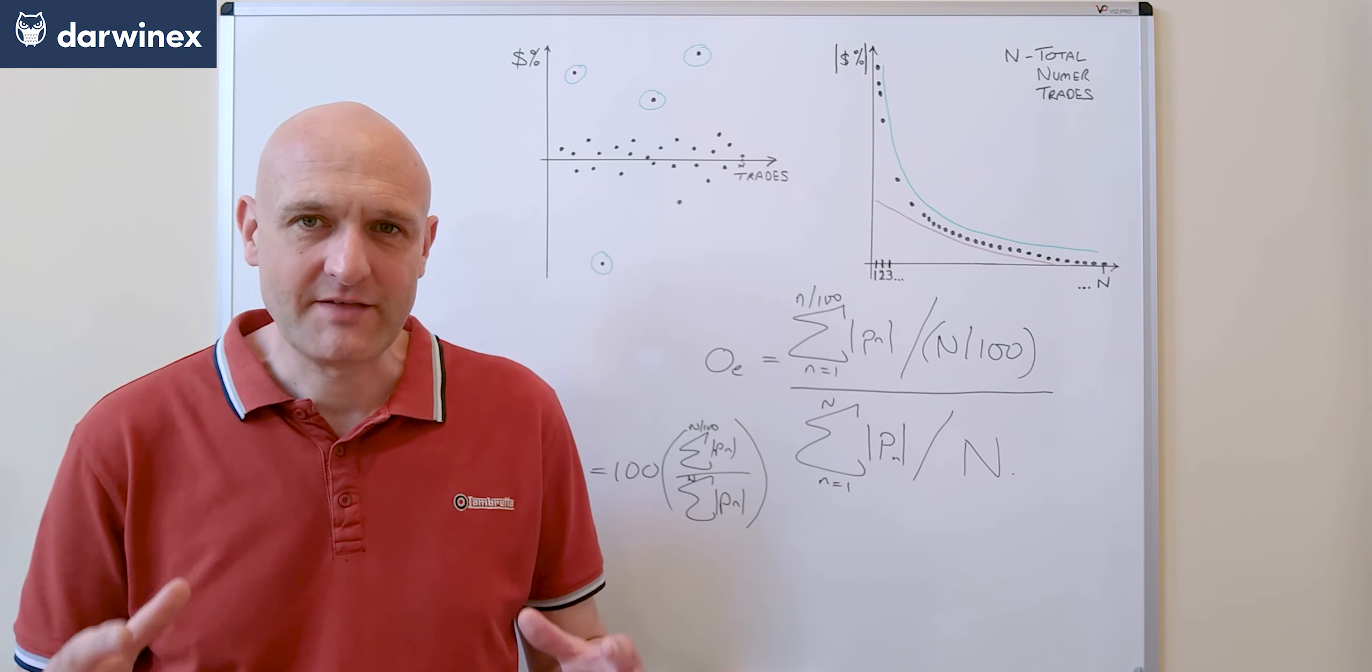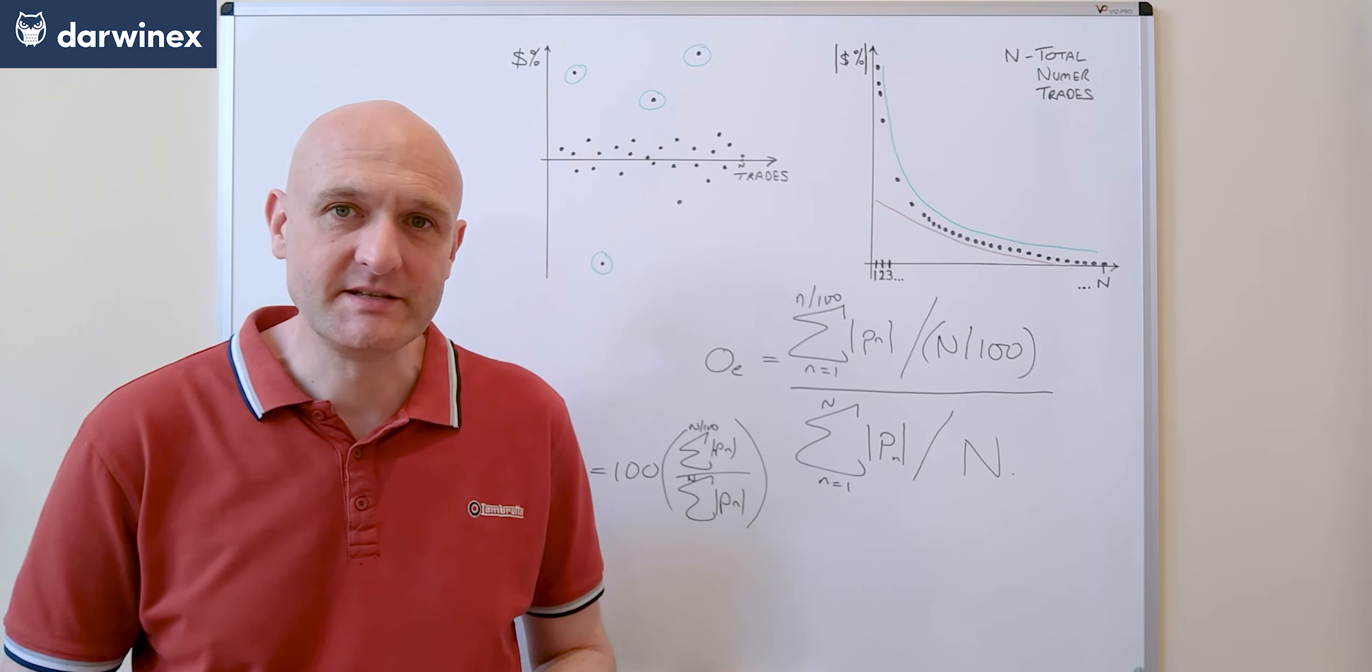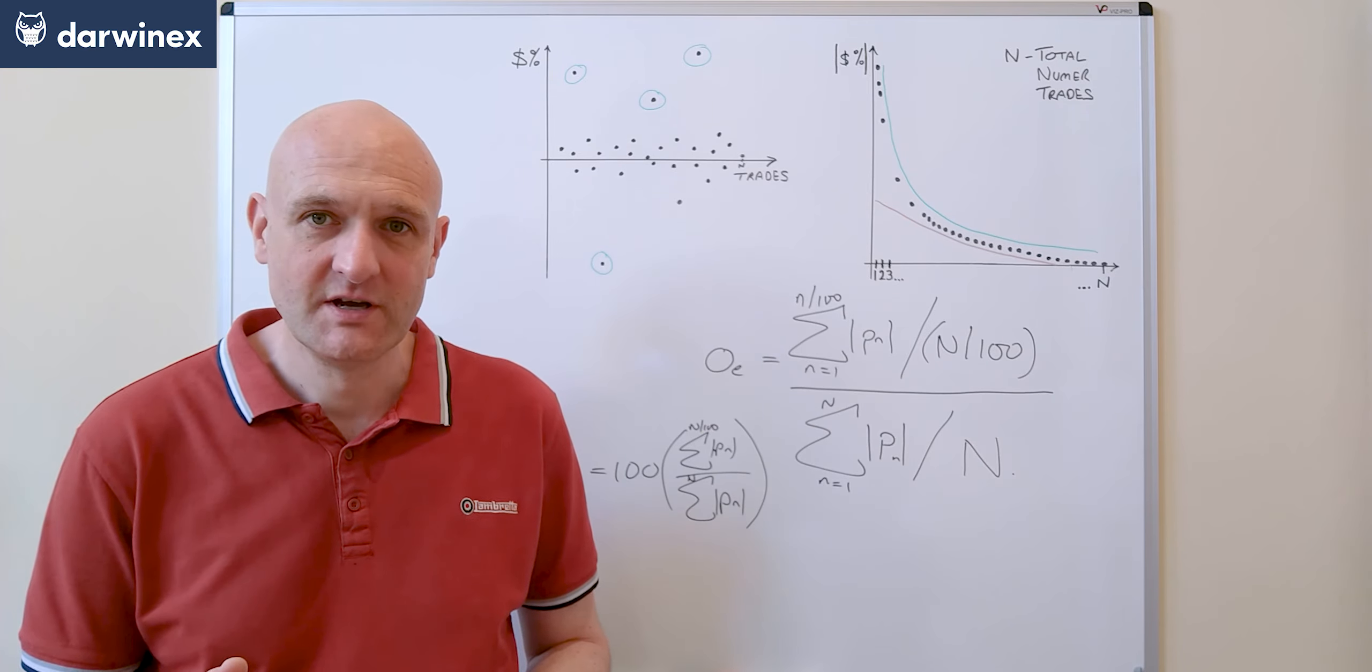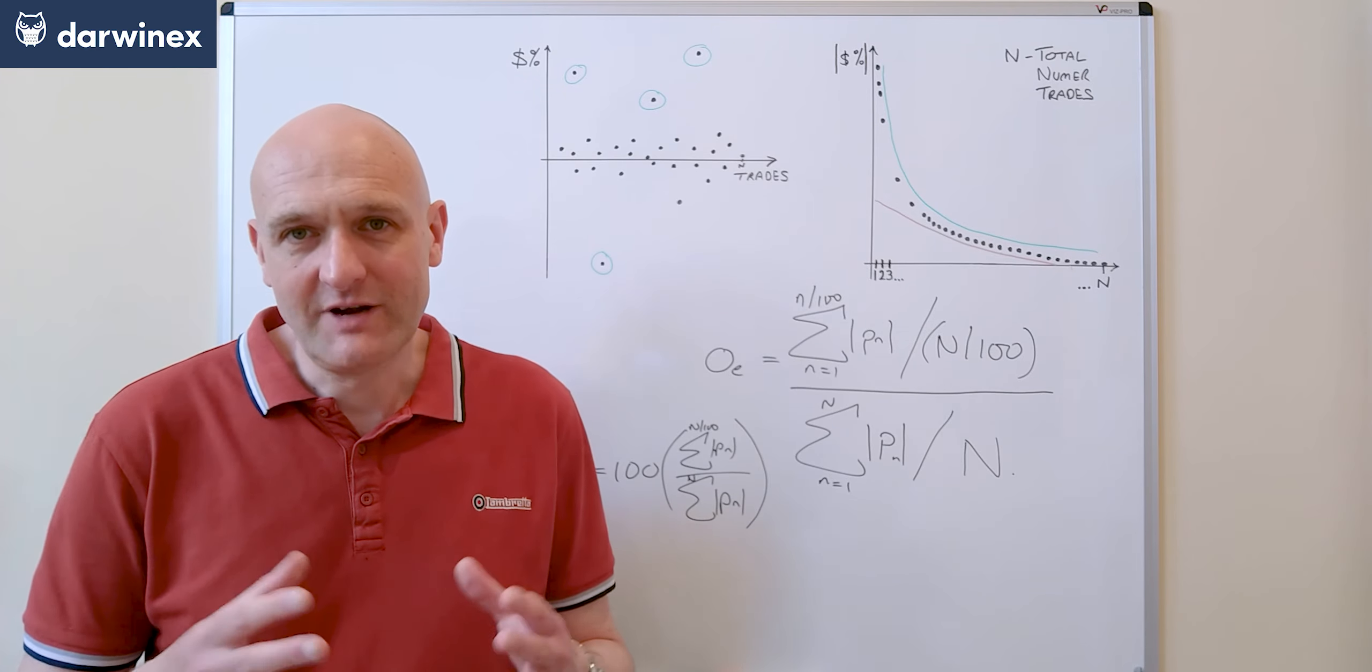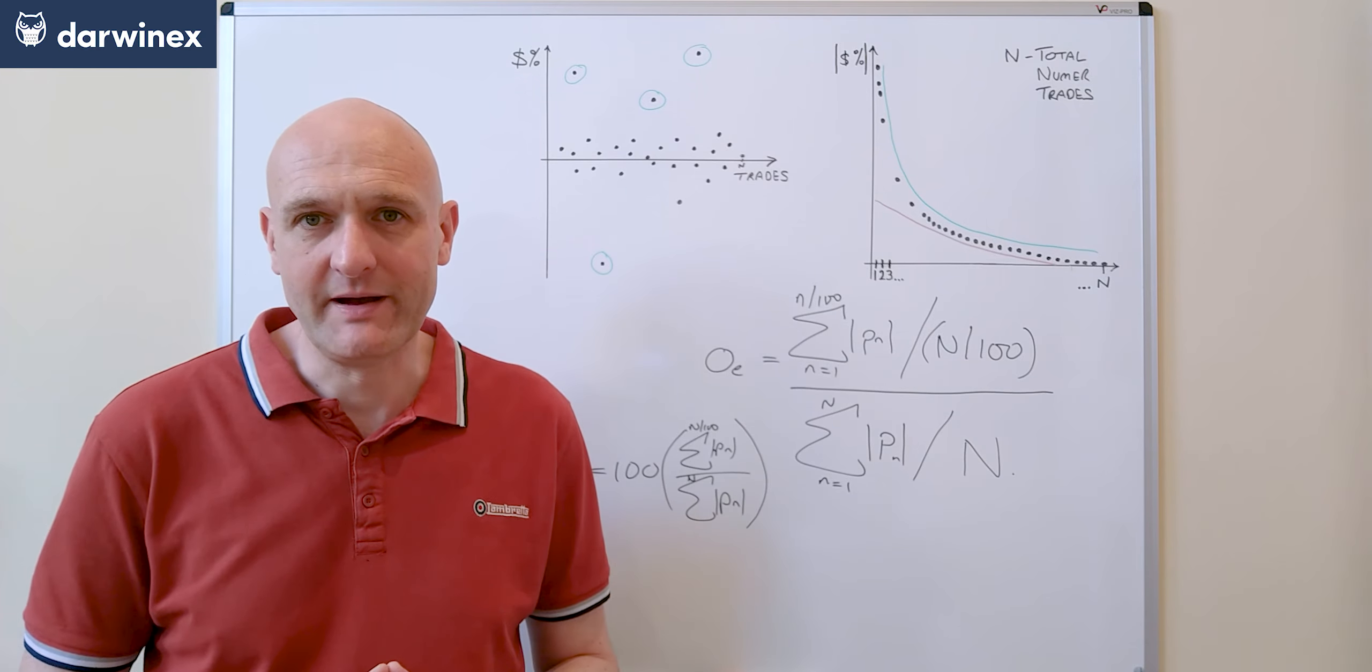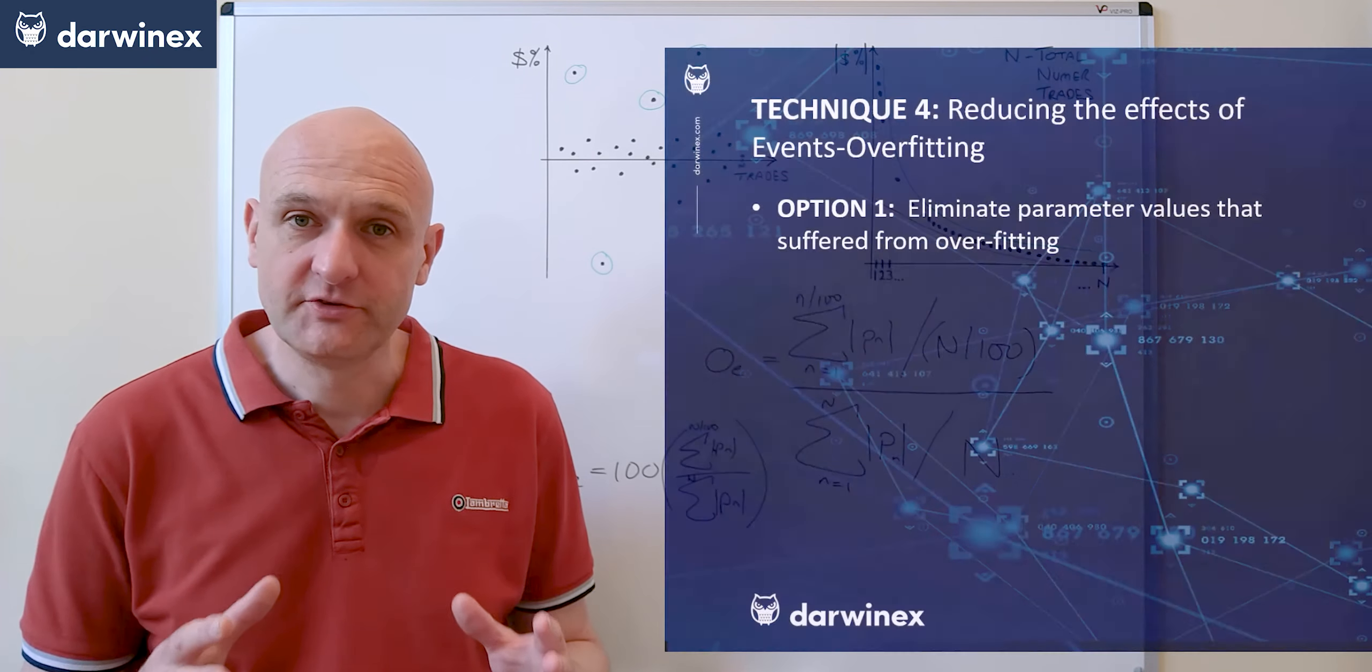Now this is quite a blunt method and one major downside of it is that you might be eliminating the best parameter values. It's either black or white, in or out, so it's a relatively simple option to implement but there are better options which brings us to option 2.